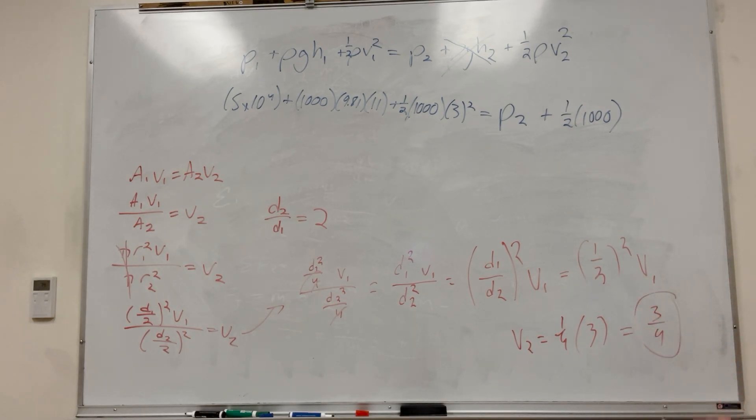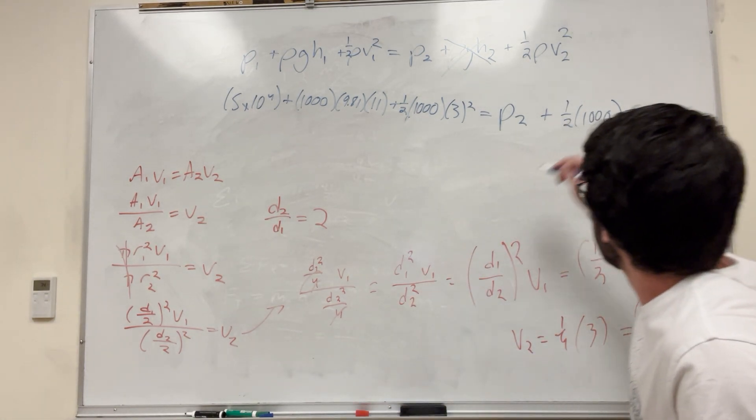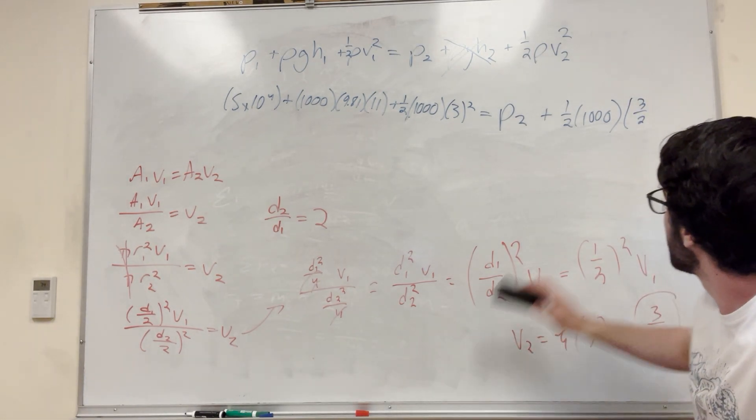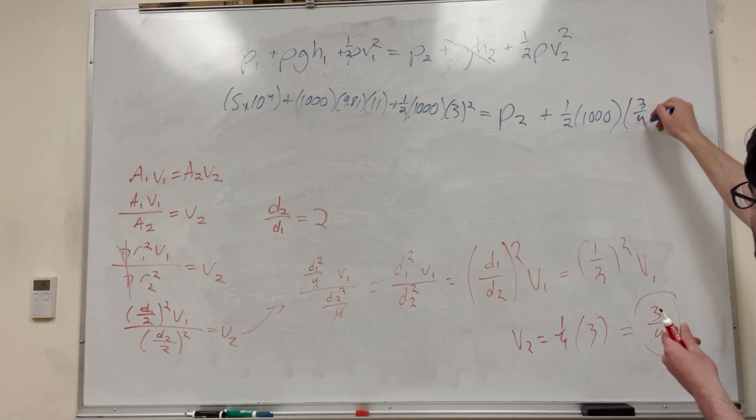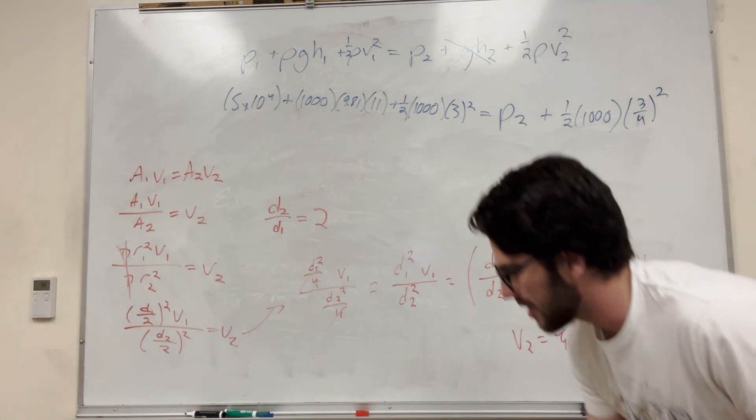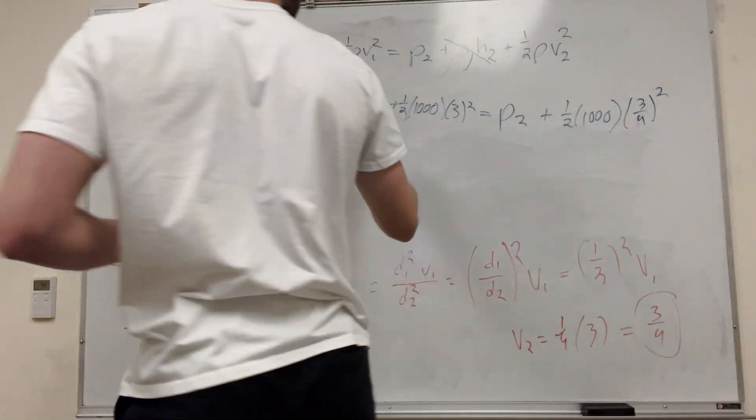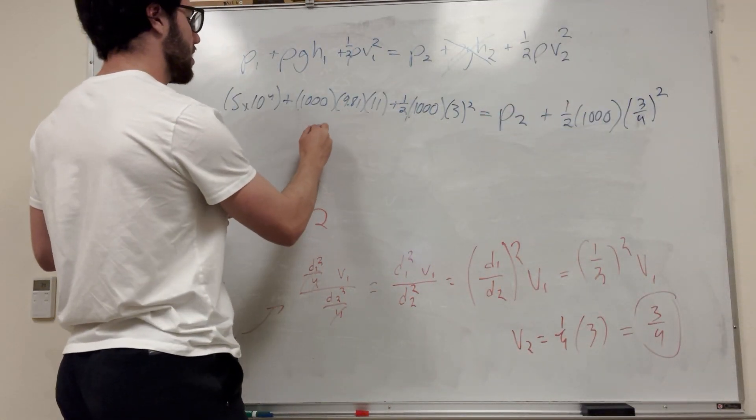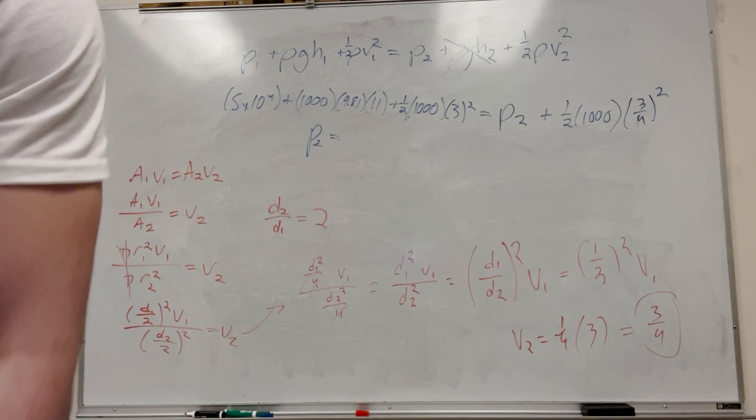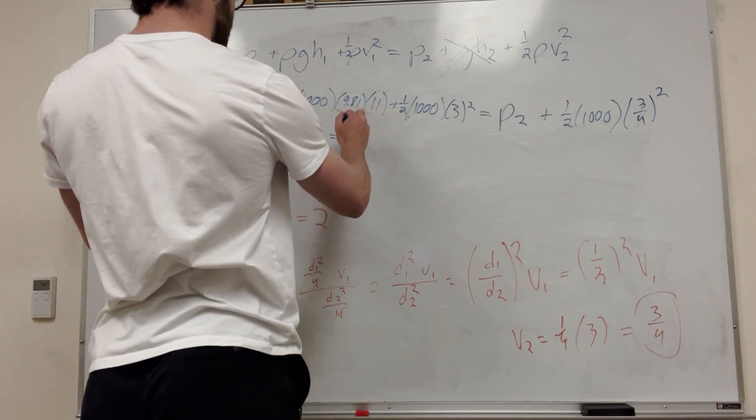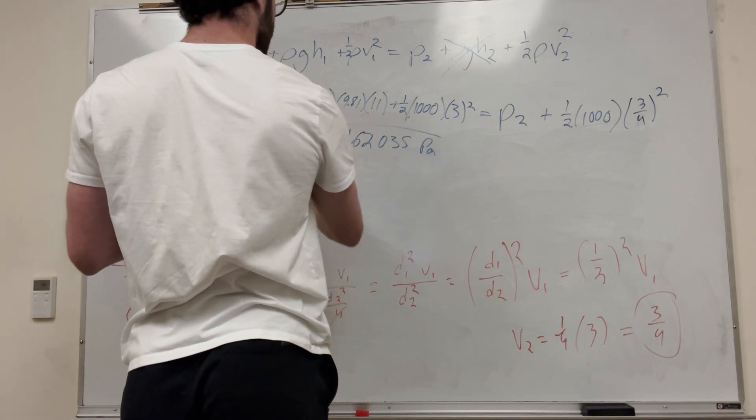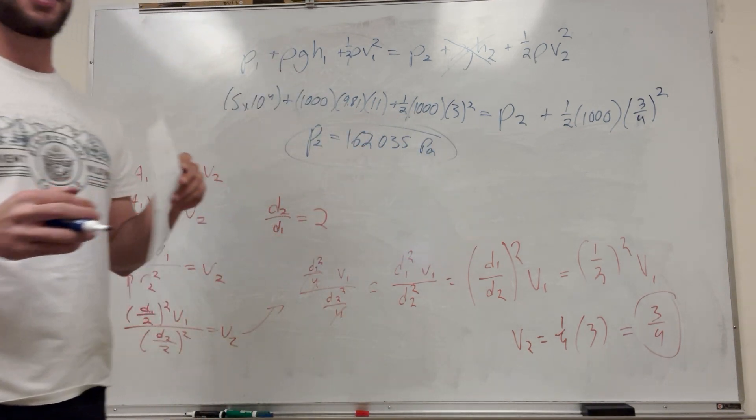There you go. We have velocity of 2. So, all we have to do now is plug 3 over 4 squared into this equation. Now, we have just the P2 and all we have to do now is sum up all of this then subtract this and solve for P2 by itself. You're going to end up with P2 is equal to about 162,035 Pascals. Use your sig figs or whatever if you want to do that.